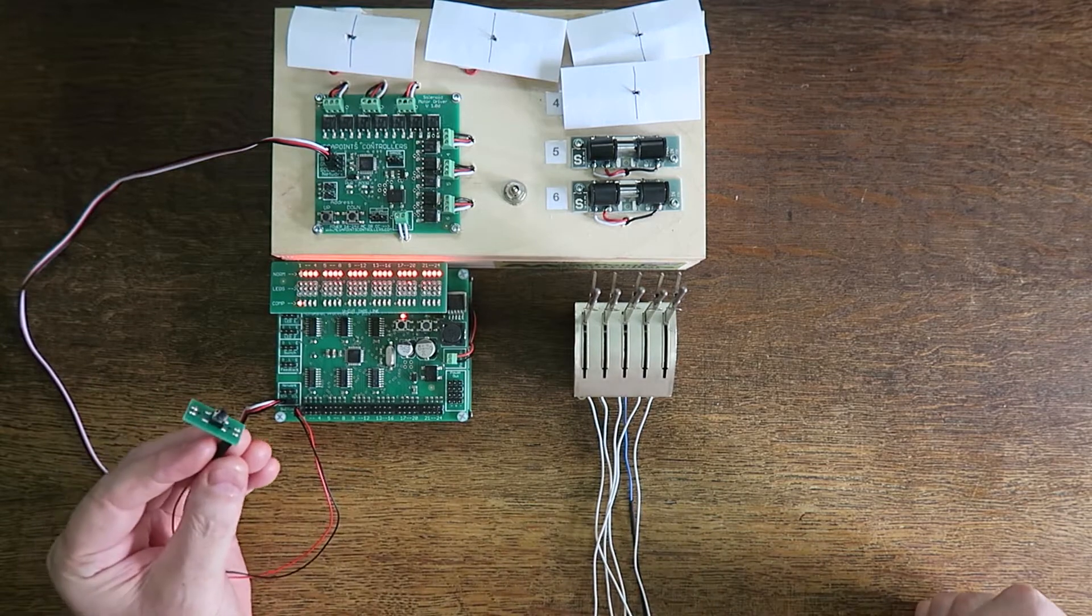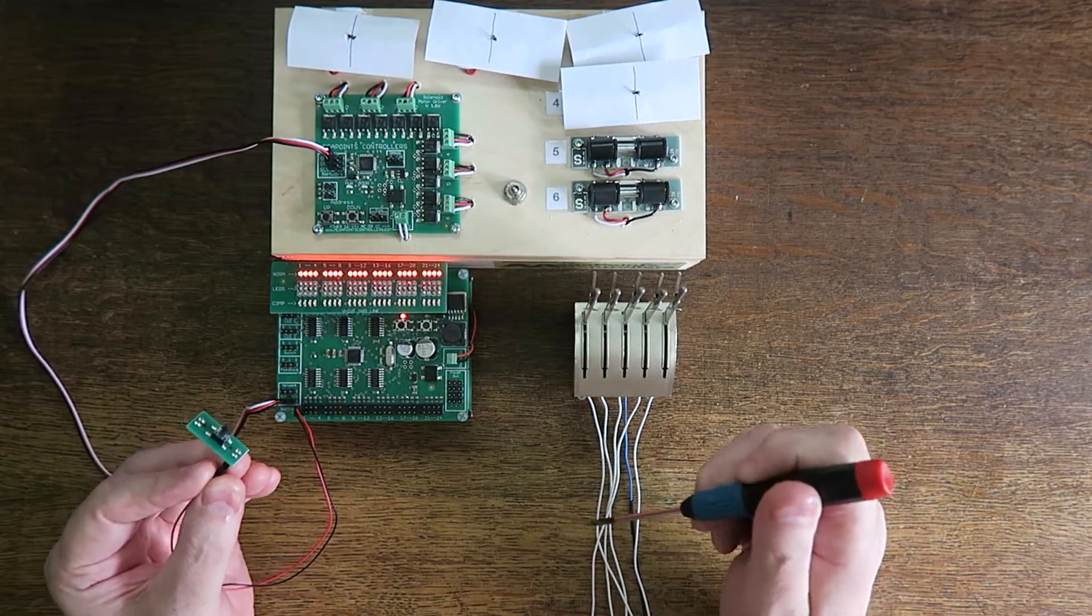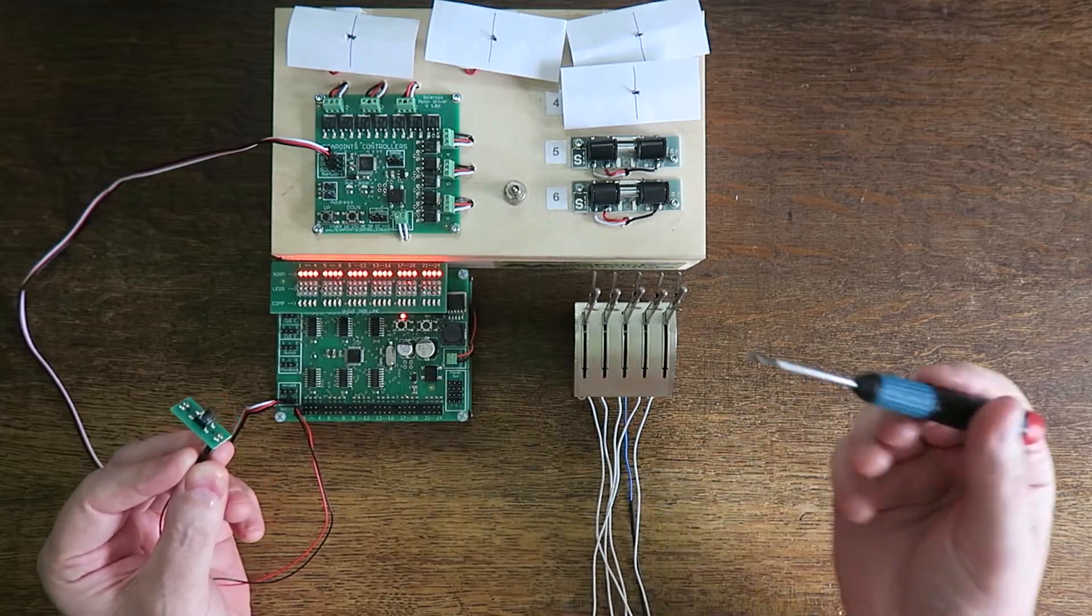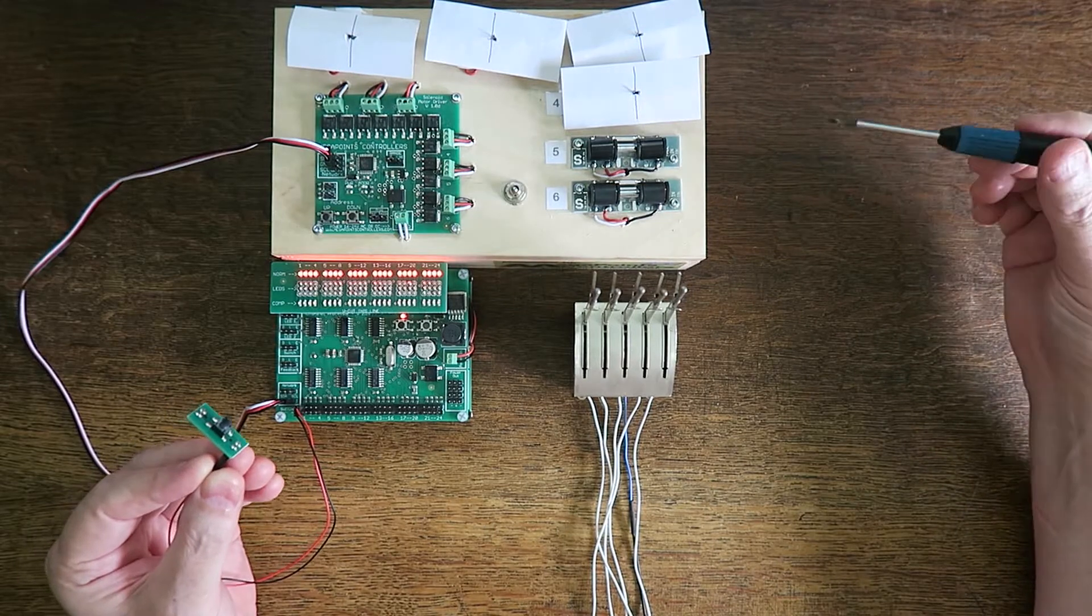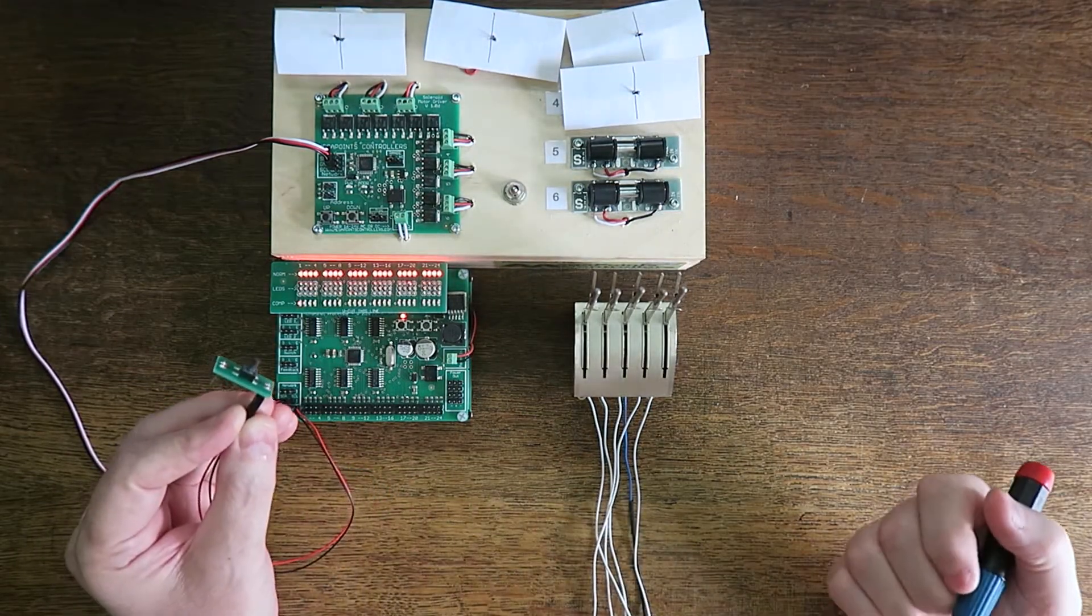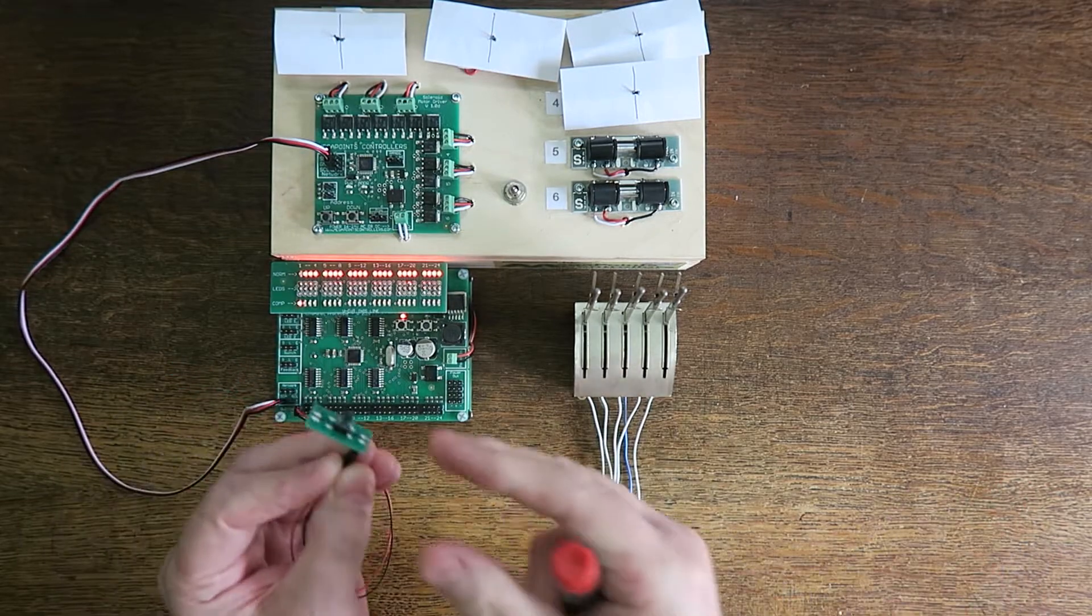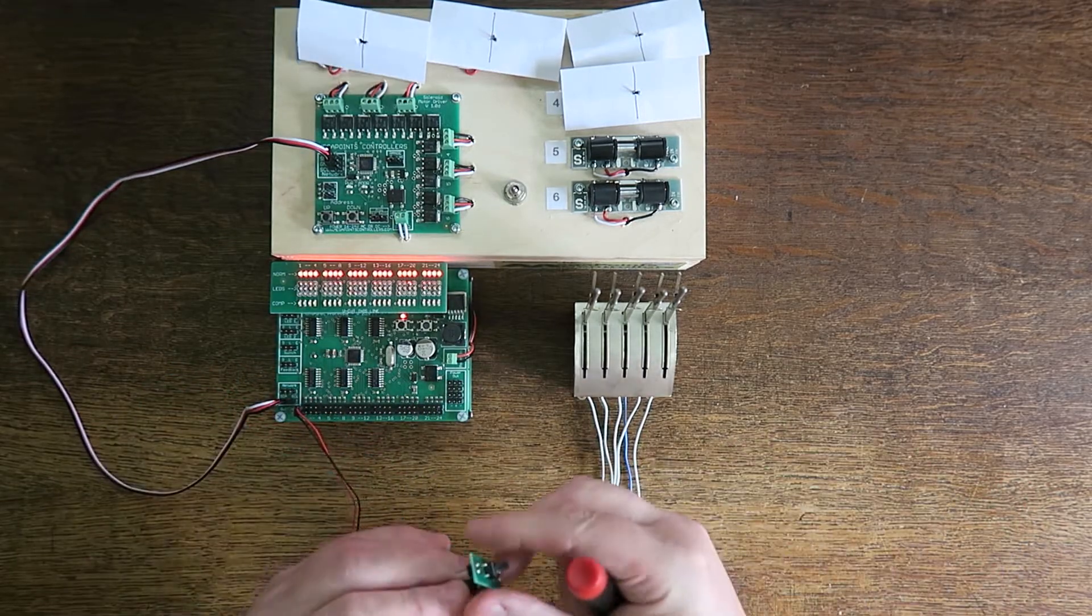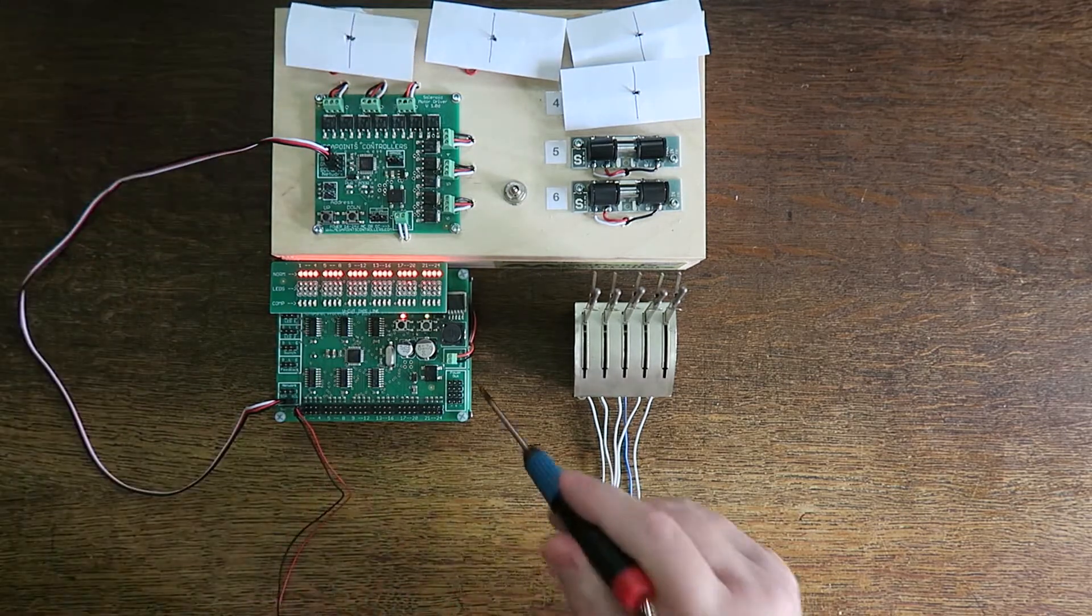Now what's actually happening here is the electronics and software on the multi-panel are determining whether this particular solenoid or every other one connected should be turned to the left or the right, and depending on how that's hooked up on your layout, whether your points will be straight ahead or turned. So effectively the state of this, or the state machine, is managed by the electronics.